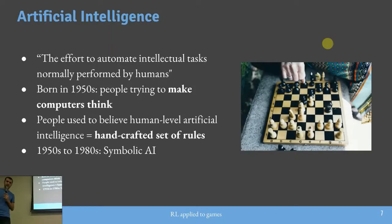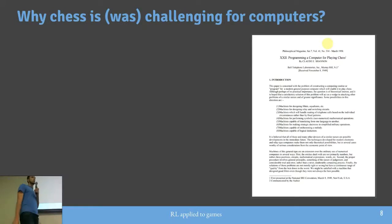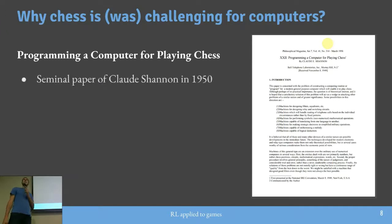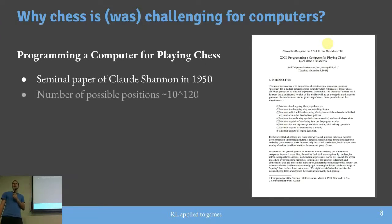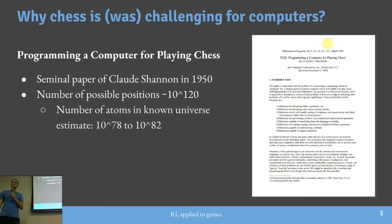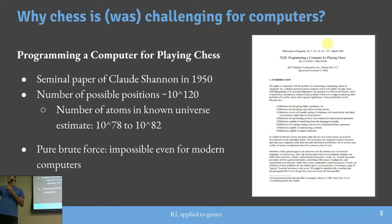Entrando no xadrez: sempre ouvi essa relação entre inteligência artificial e xadrez, mas quando é que começou isso? Tem um paper de 1950, pelo Claude Shannon — pai da teoria da informação —, que apontou que o número de posições possíveis do tabuleiro de xadrez é aproximadamente 10 elevado a 120, maior que o número de átomos conhecidos no universo, entre 10^78 e 10^82. Uma abordagem brute force é muito custosa computacionalmente.